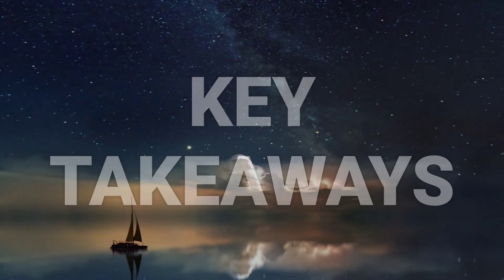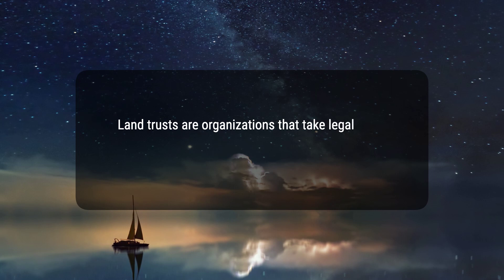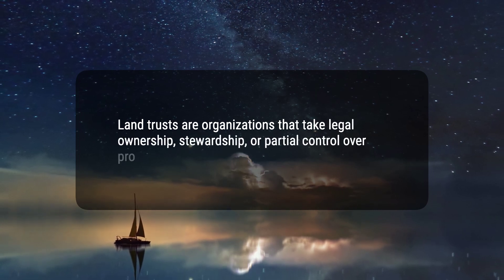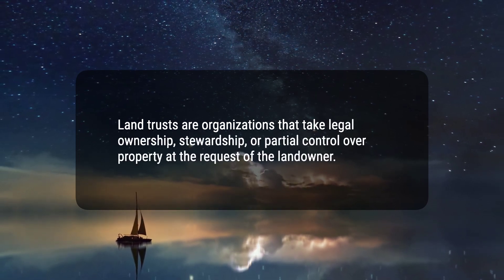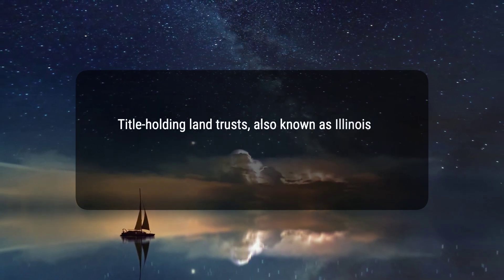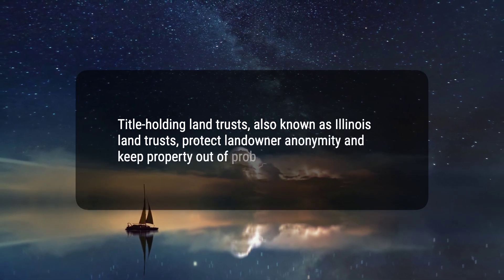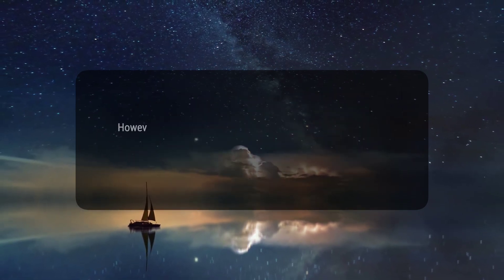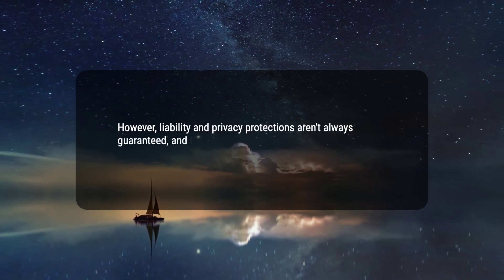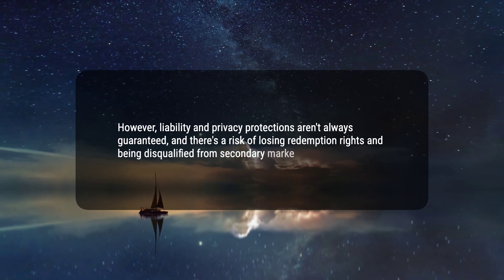Here are five key takeaways. 1. Land trusts are organizations that take legal ownership, stewardship, or partial control over property at the request of the landowner. 2. Title-holding land trusts, also known as Illinois land trusts, protect landowner anonymity and keep property out of probate. 3. However, liability and privacy protections aren't always guaranteed, and there's a risk of losing redemption rights and being disqualified from secondary market loans.